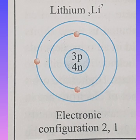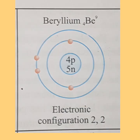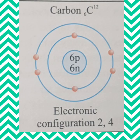You can draw the electronic configurations yourself, but if you have any problem you can look at page 59 in your book. For lithium (3Li7): three protons and four neutrons; K shell has two electrons and L shell has one electron, so the electronic configuration is 2,1. For beryllium (4Be9): four protons and five neutrons; K shell has two electrons and L shell has two electrons, so the configuration is 2,2. Use a pencil and compass for drawing the circles.